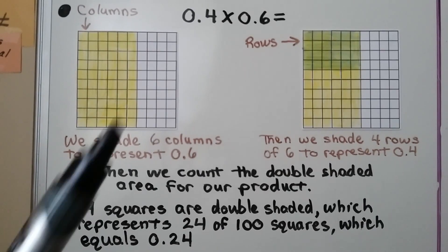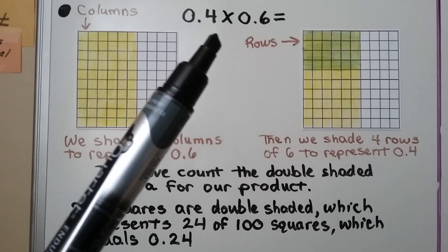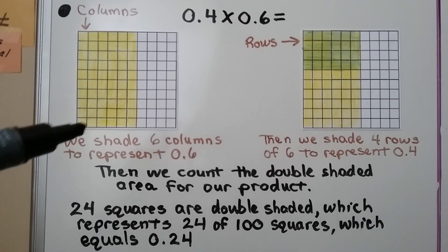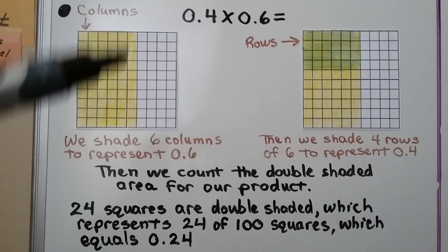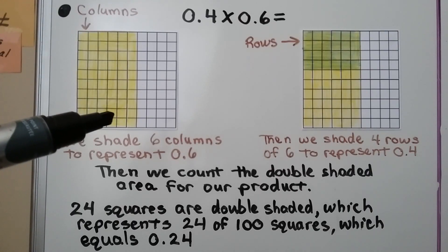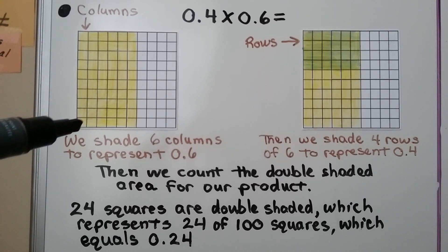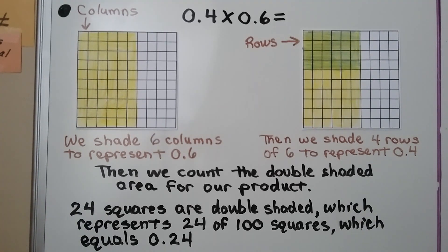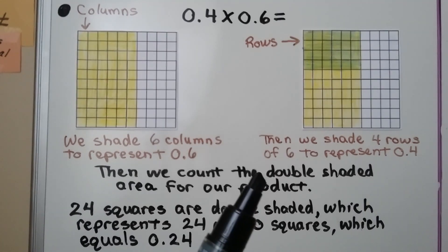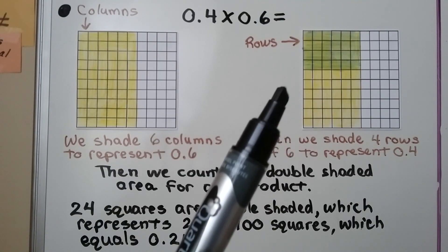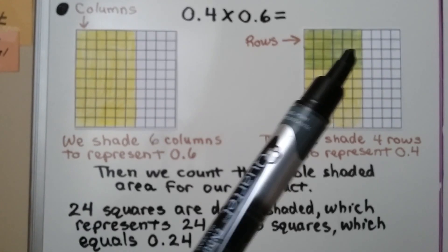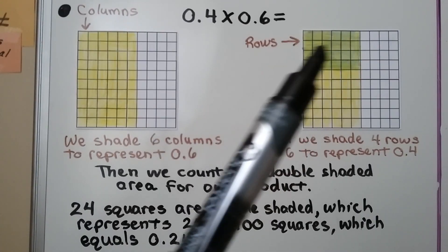For 4 tenths times 6 tenths, we shade in 6 columns to represent the 6 tenths. Each column coming down is 1 tenth. There are 100 squares here. Then we shade 4 rows of 6 to represent the 4 tenths. We have 4 rows here.